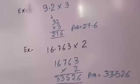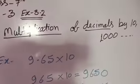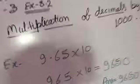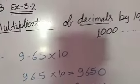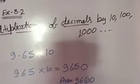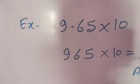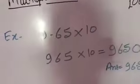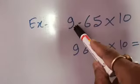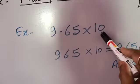By the same process we can do many different types of multiplication sums. Now, how do we multiply a decimal by ten, hundred, and thousand? We will learn how to multiply our decimal number with 10, 100, 1000, 10000, and so on.